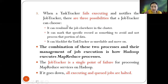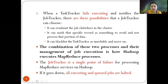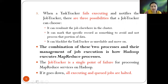When a task tracker fails executing and notifies the job tracker, there are three possibilities the job tracker can choose from. First, it can resubmit the job elsewhere in the cluster. Second, it can mark that specific record as something to avoid and not process that portion of the data, since the data itself may be problematic. Third, it can blacklist the task tracker as unreliable and move on, not relying on or assigning further tasks to that task tracker.